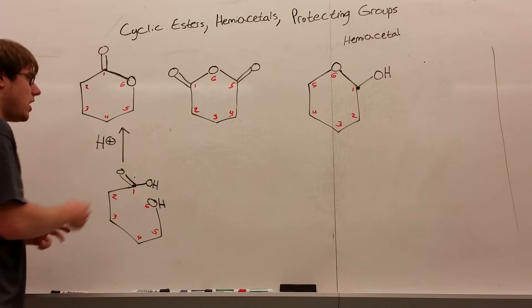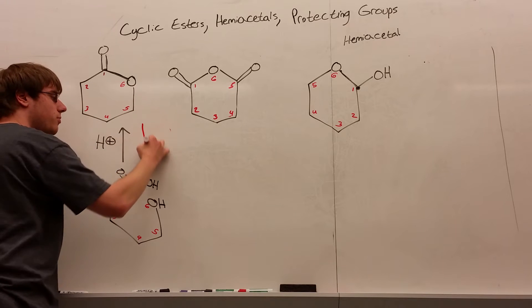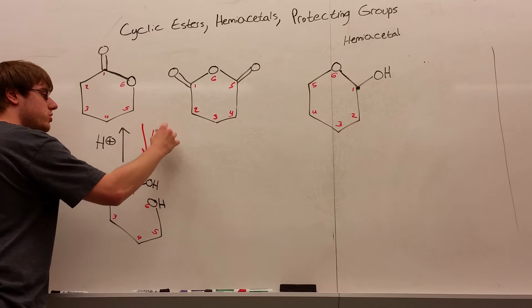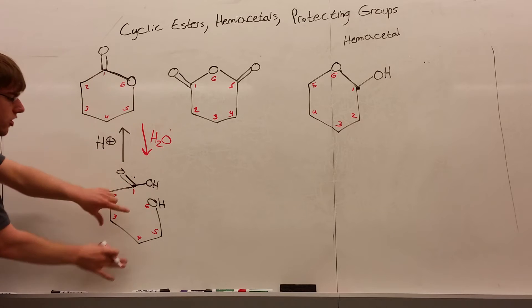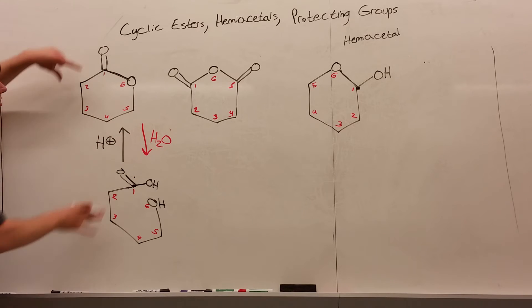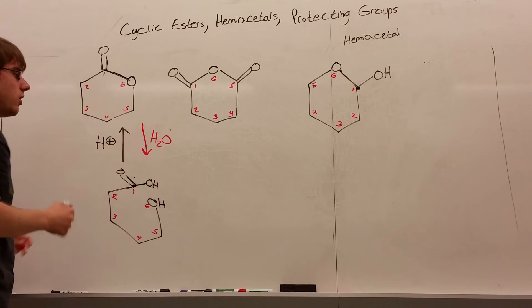Now what if we wanted to actually go forward from this to this? Well, turning it from the cyclic ring to this going forward would just be the use of H2O. So pay attention to the direction of your arrows. If you're starting with the carbon chain and going to the ring, you use H+. If you're starting from the ring and going to the carbon chain going forward, you use H2O.